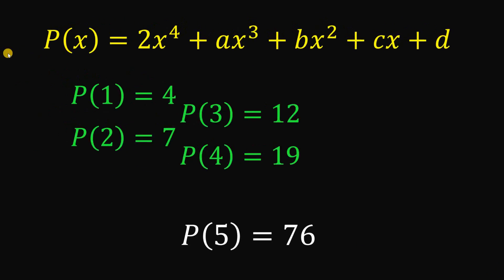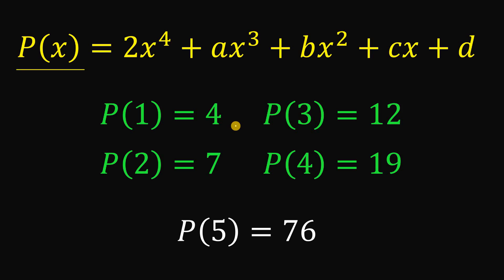Therefore, given this polynomial P of x and P of 1 equals 4, P of 2 equals 7, P of 3 equals 12, P of 4 equals 19, then the value, the numerical value of P of 5 simply equal to 76. And as always, we are done.